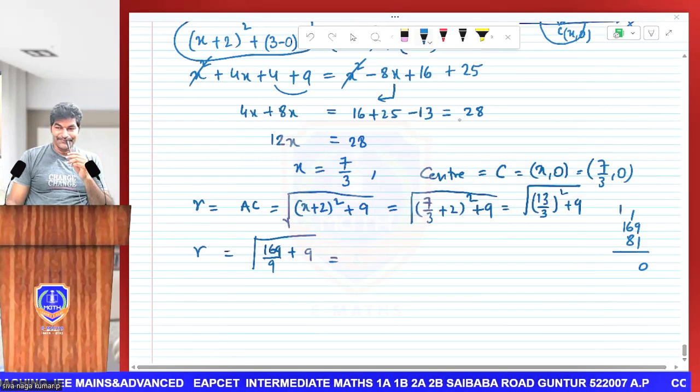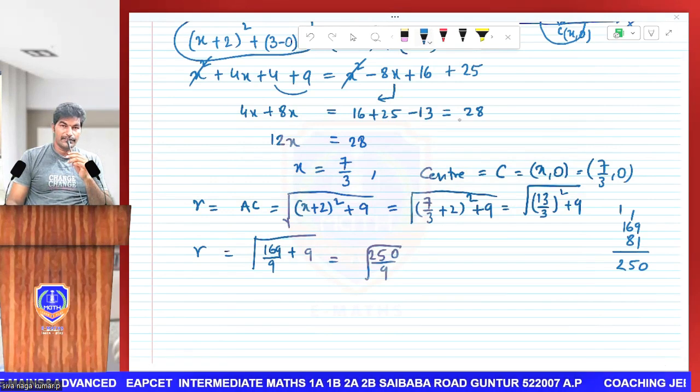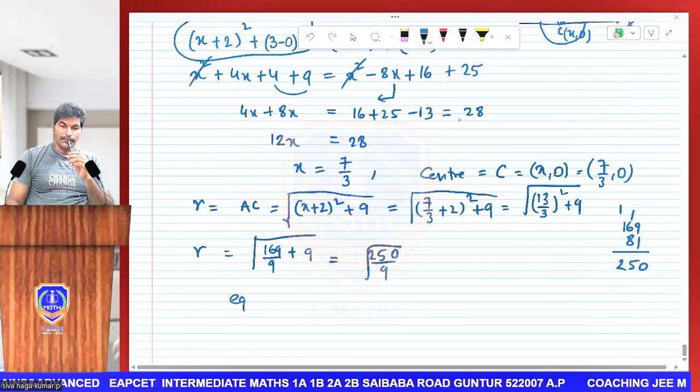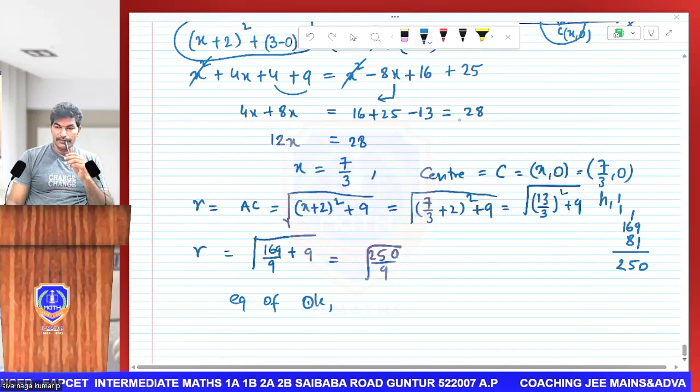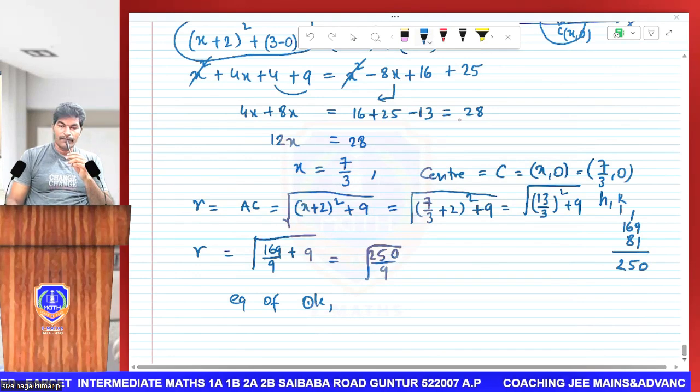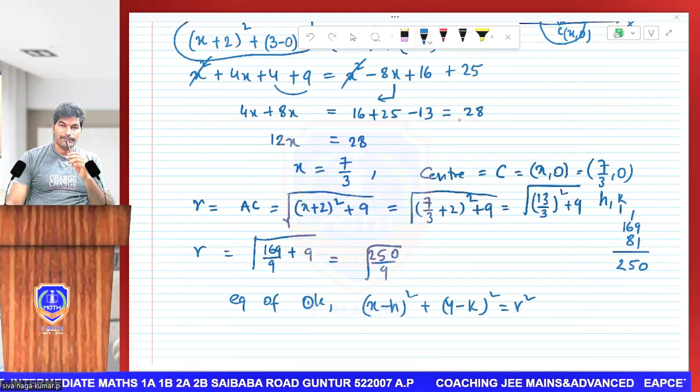This is 250. √(250/9). Now equation of circle. Center is (h, k). Formula is (x - h)² + (y - k)² = r².